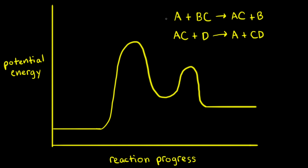Let's consider a reaction with the following multi-step mechanism. In step one, A reacts with BC to form AC plus B. And in step two, AC reacts with D to form A plus CD.